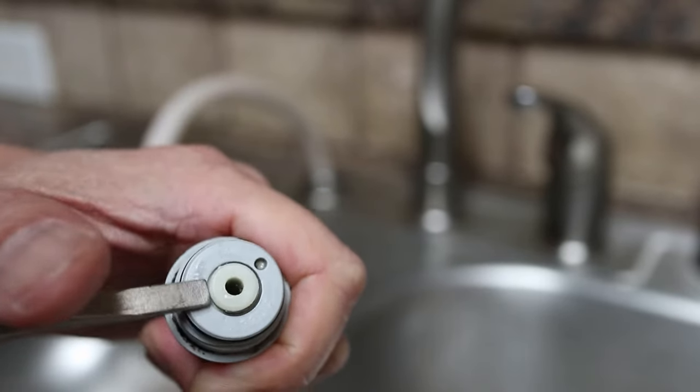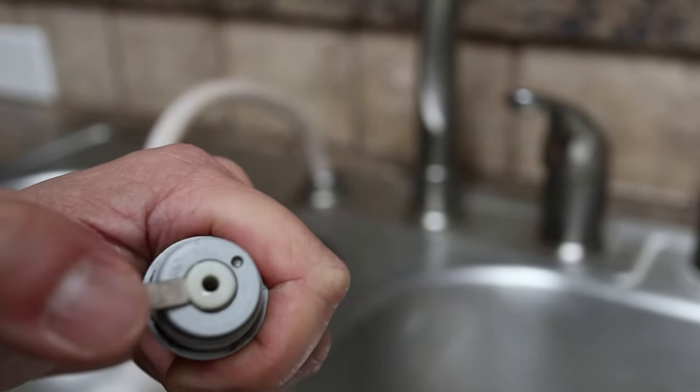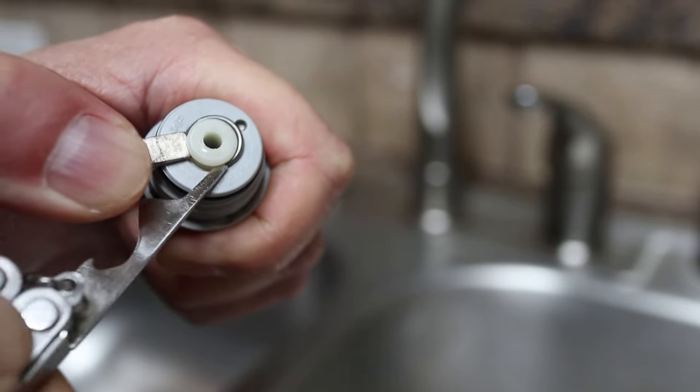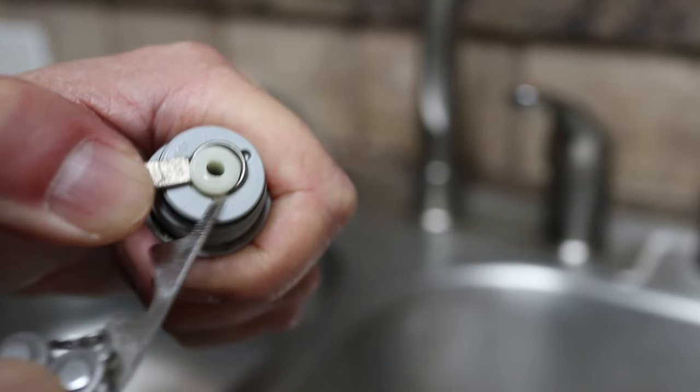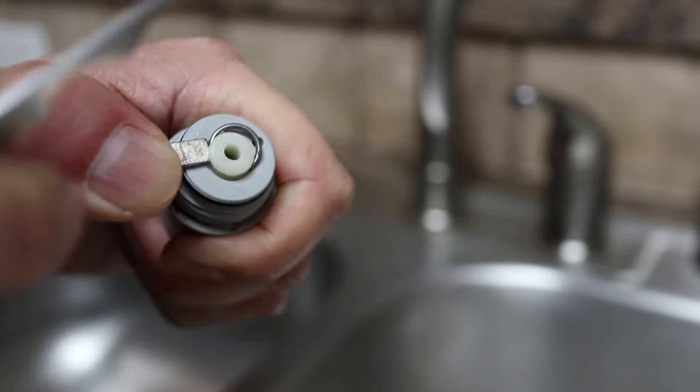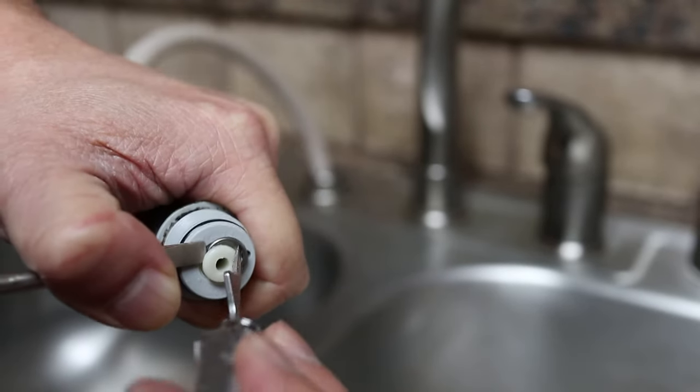And now this is probably the toughest part. There's a little retaining clip that needs to come out. I had to use one screwdriver to hold it in place and then another one to push it out. And you might want to aim this into a towel in the sink because the clip might go flying. And I'm telling you this because I almost lost mine.